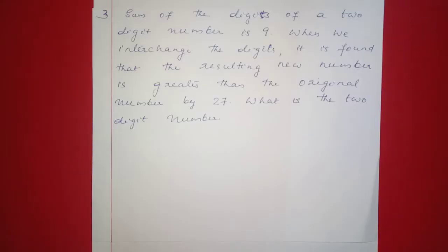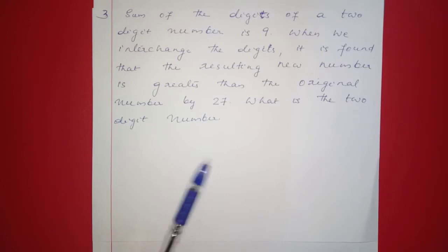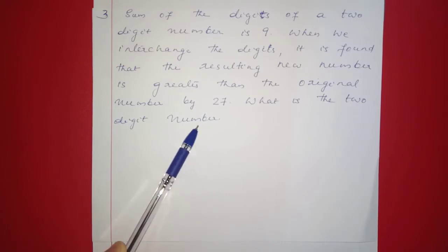Next question: the sum of the digits of a two-digit number is 9. When we interchange the digits, the resulting new number is greater than the original number by 27. What is the two-digit number? How do we approach interchanging the two-digit number?